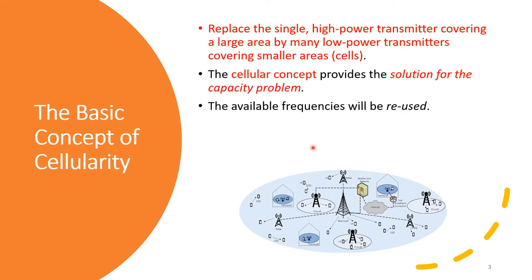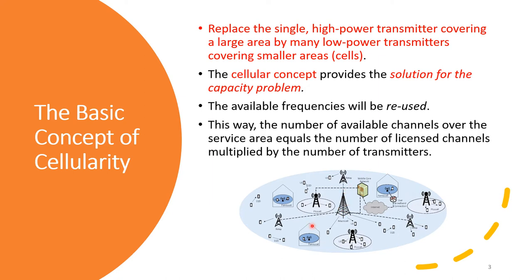The available frequencies can now be reused by different towers in different cells. The number of available channels over the service area equals the number of licensed channels multiplied by the number of transmitters, because the same frequency used here can be reused at another location. The energy will decay, so we can reuse the frequency elsewhere — that is the basic concept of cellularity.